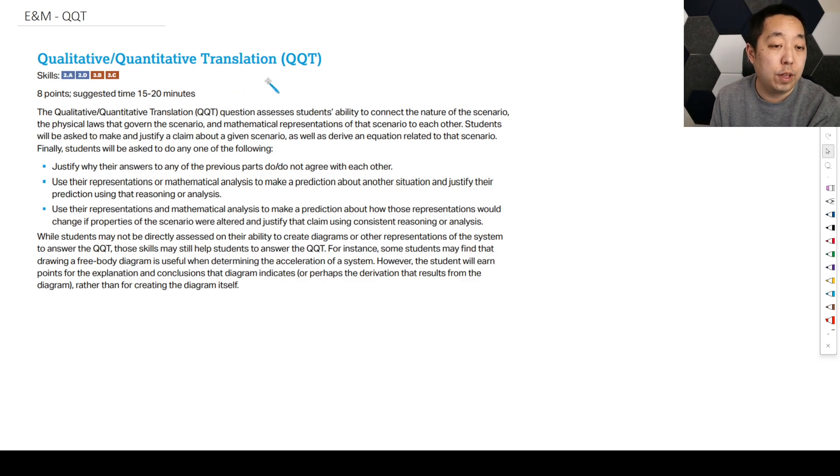All right, so the last and fourth FRQ you run into is the qualitative quantitative translation, and there are three things that you're asked to do. You're going to make and justify a claim about a scenario. This is the qualitative part of it, not with equations or anything like that, but using physics principles.